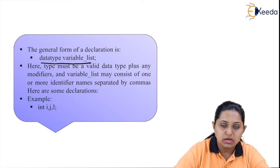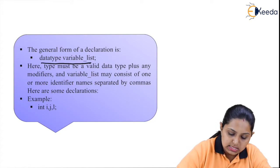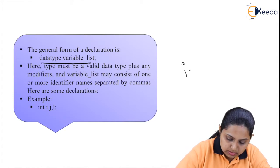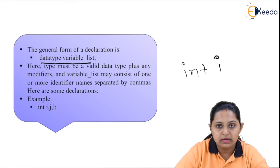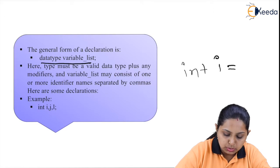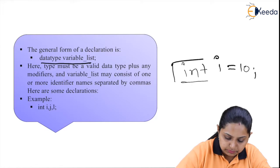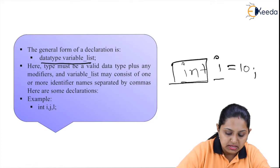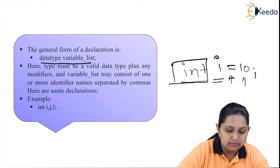The syntax or example for a variable is: int i = 10. Here 'int' is the data type of my variable, 'i' is my identifier name, and I am assigning the value 10 to it.